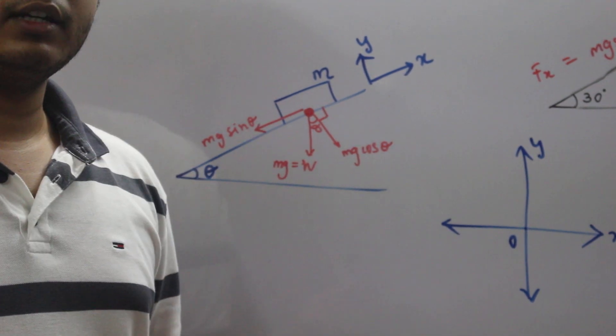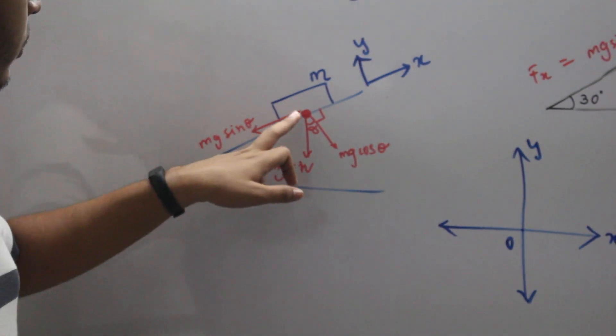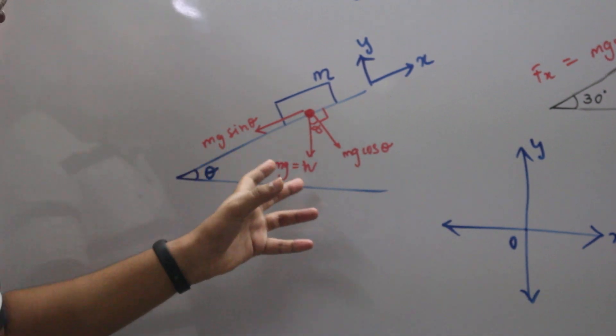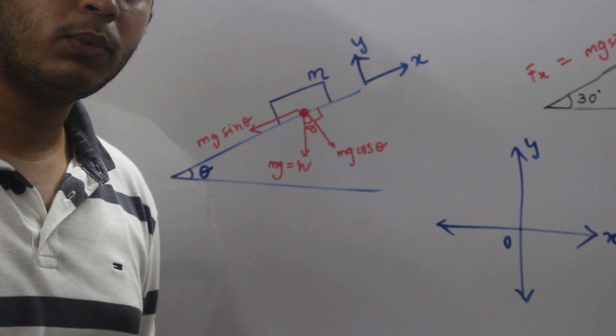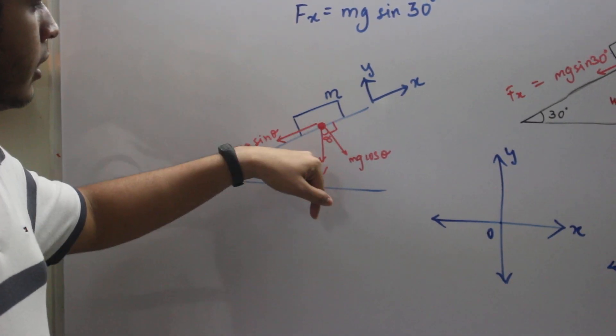For solving this kind of problem you have to consider mass m as a point mass. Once you consider it as a point mass, the weight of that mass is m times g. g is acceleration due to gravity, value 9.81 m per second squared. W equals mg will act straight downwards.